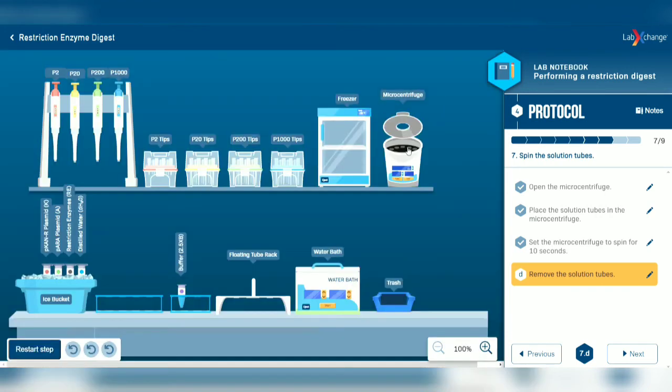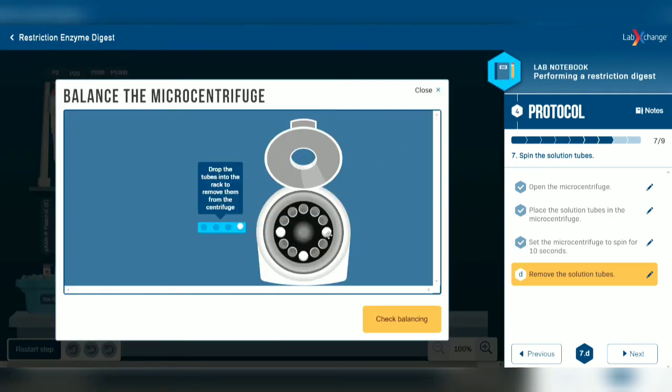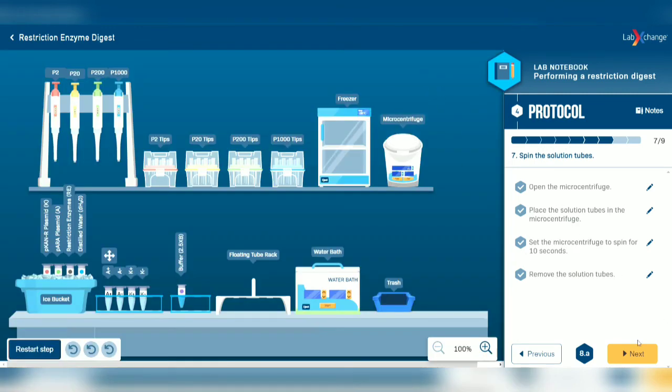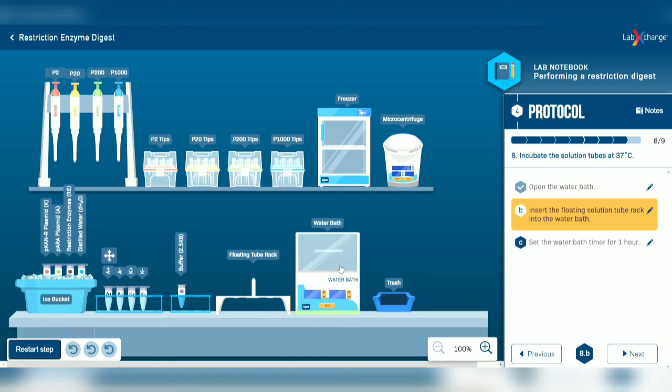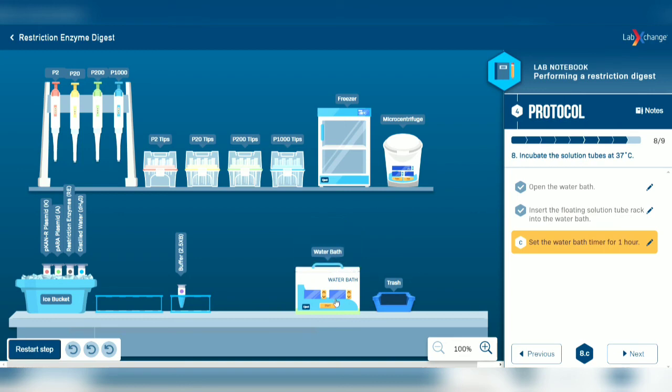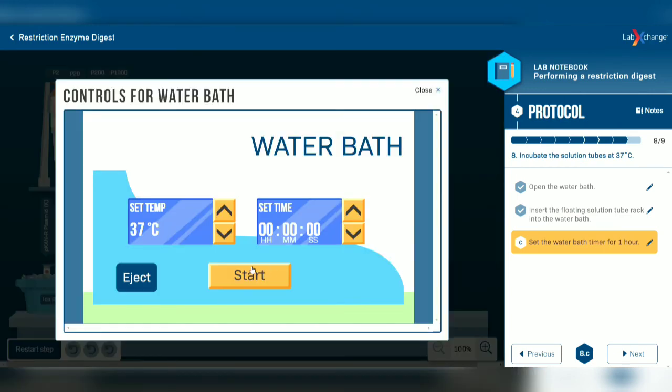After 10 seconds, remove the solution tubes from the microcentrifuge and close it. Now open the water bath and move the solution tubes to the floating tube rack. Insert the floating rack into the water bath, close it, and set the timer for one hour.